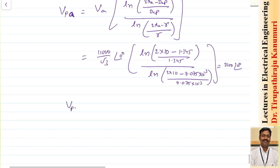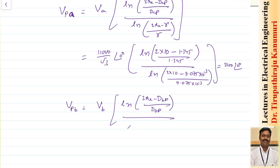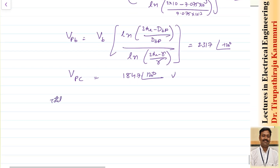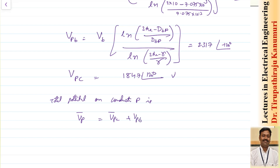Similarly, V_PB = V_B × ln(2H_A minus D_BP)/D_BP divided by ln(2H_A minus R)/R. Substituting values gives 2317∠-120° volts. For V_PC, using the same formula, you get 1847∠+120° volts. The total potential on conductor P is V_PA + V_PB + V_PC. Taking the vector sum, this gives 407 volts.